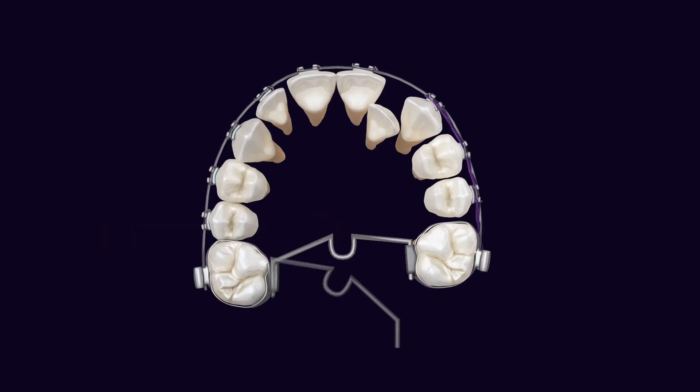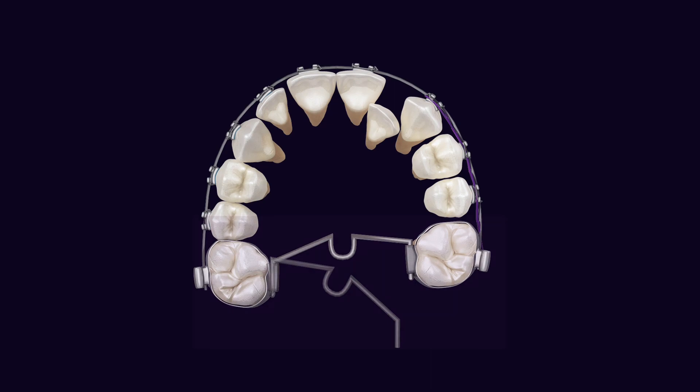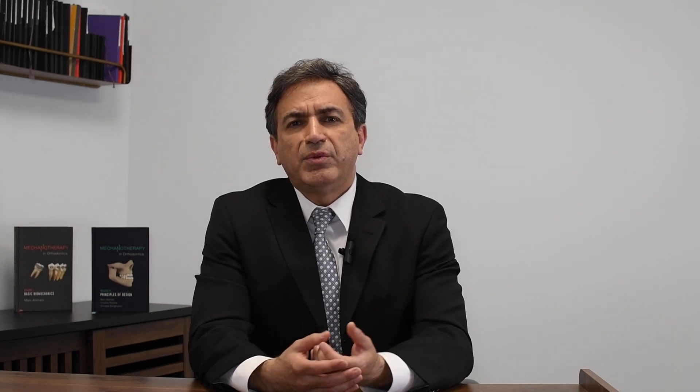Assume you are planning to distalize the upper left posterior teeth. For this design you are using a one-couple system or two-couple system in the format of the TPA — transpalatal arch — producing a force in your favor, pushing the molars backward. At the same time, you may think: while my molar is going backward, why don't I apply additional force to bring the premolars backward? In that case I achieve the goal of making space for a blocked-out tooth as fast as possible.